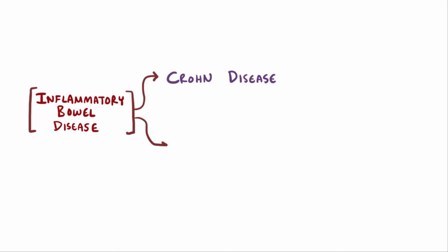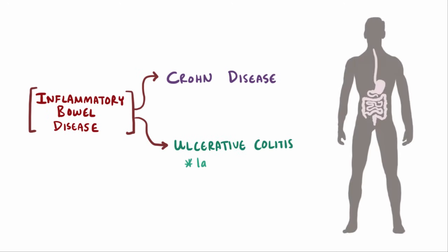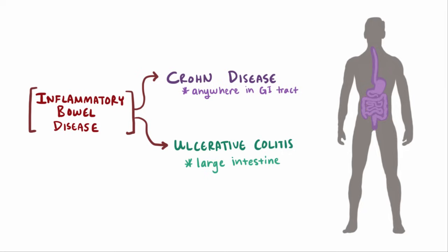Unlike its cousin, ulcerative colitis, which only affects the large intestine, Crohn disease causes inflammation and tissue destruction anywhere along the gastrointestinal tract, from the mouth to the anus.